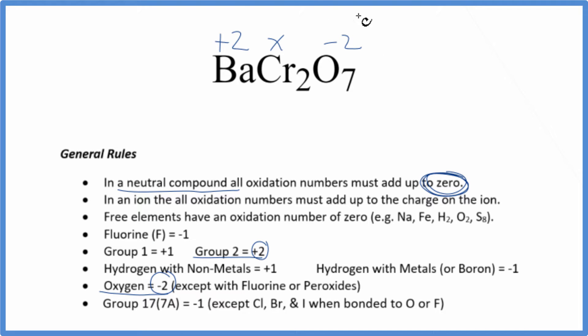We know that these numbers, all of this, will add up to zero. So we could just set up an equation. Barium's two plus, so we have two plus. We don't know the chromium, we have two times X, two X. And the oxygen, seven times minus two, that's minus 14.